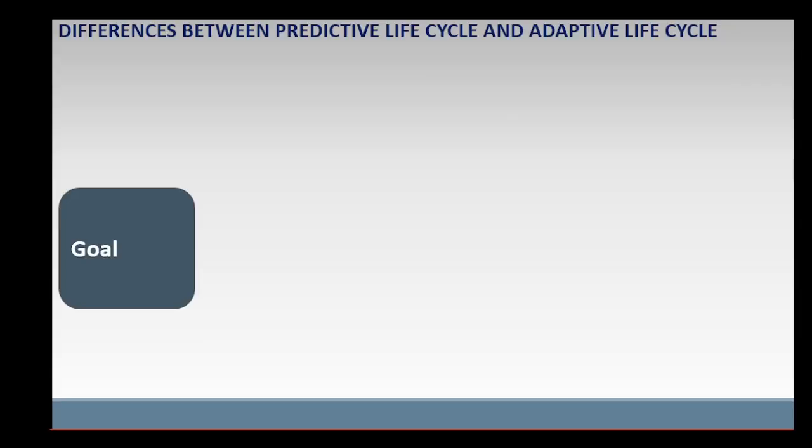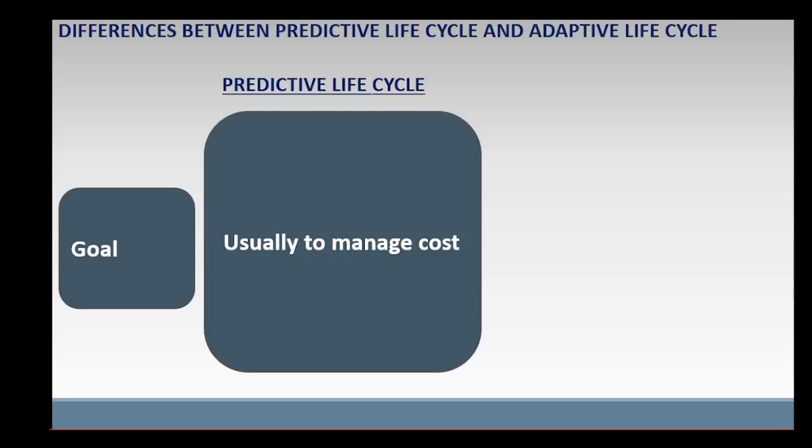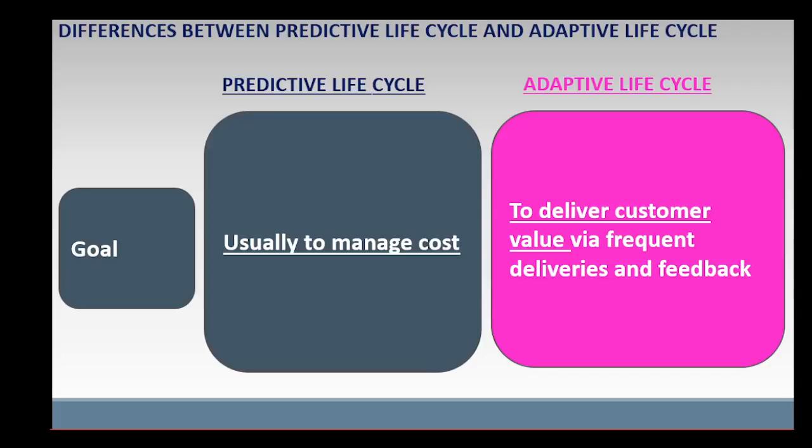In terms of goal, in predictive life cycle, the goal is usually to manage cost. In adaptive life cycle, the goal is to deliver customer value via frequent deliveries and feedback.